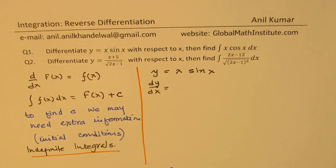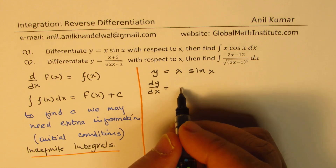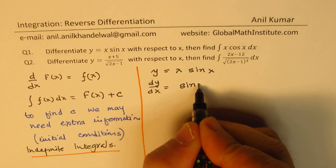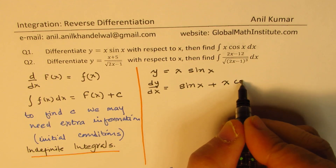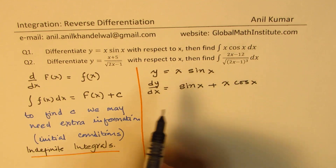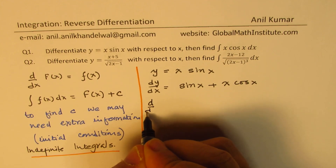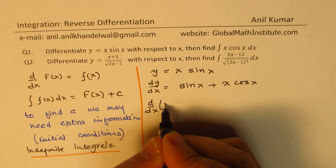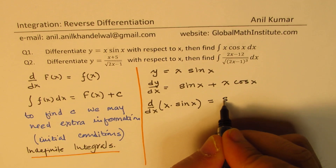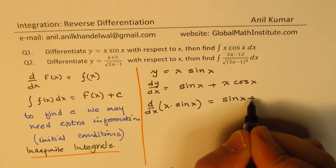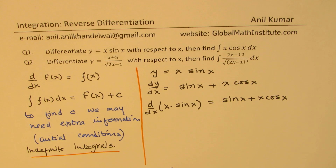We apply the product rule. So dy/dx equals the derivative of x, which is 1, times sin(x), plus x times the derivative of sin(x), which is cos(x). So we find that the derivative of the function x·sin(x) is equal to sin(x) plus x·cos(x).